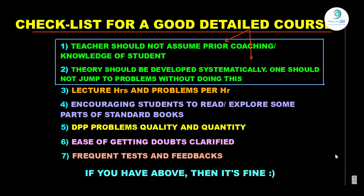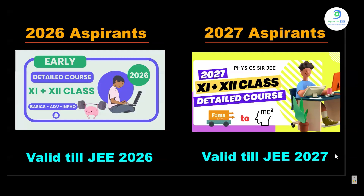Students who are 2026 and 2027 aspirants can look for a good detailed course on our Physics Surgery app or physicssurgery.com website. You can find thumbnails for the 11th-plus-12th entire syllabus detailed course for 2026 aspirants, valid till JEE Advanced 2026 (around May 2026), and for 2027 aspirants, the entire 11th-plus-12th syllabus detailed course valid up to JEE Advanced 2027. Course links are in the description. Go to the website, find the relevant course, and read all the features carefully.